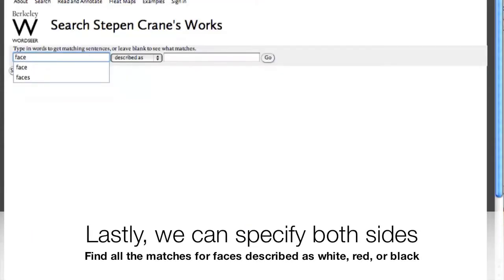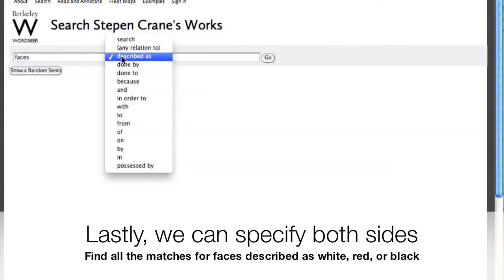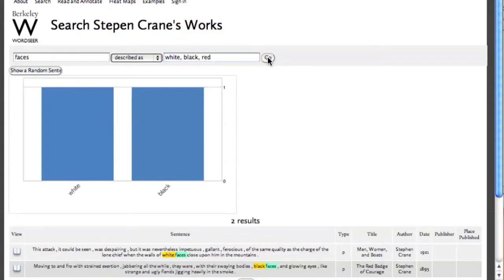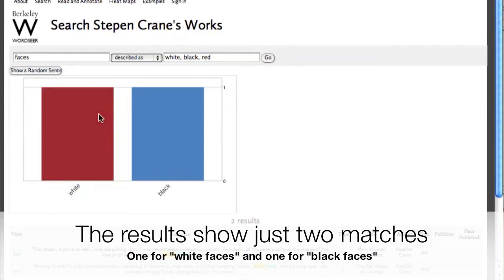Lastly, we can specify both sides of the described-as search box. We can retrieve all instances of where faces is described as white, black, or red. We get two matches, one for white, and one for black.